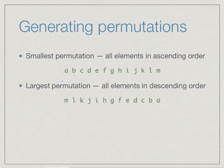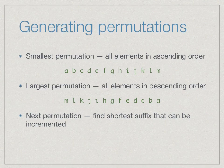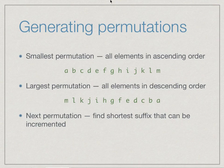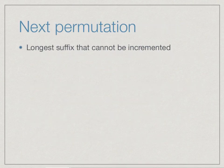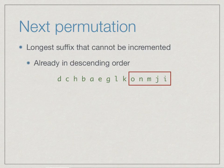If we want to find the next permutation, we need to find as short a suffix as possible that can be incremented. The shortest suffix that can be incremented consists of something followed by the longest suffix that cannot be incremented. A suffix that cannot be incremented is one which is as large as it could possibly be, which means it is already in descending order.